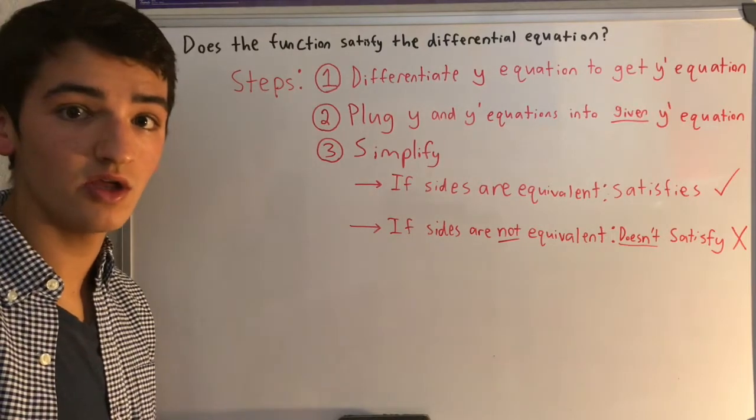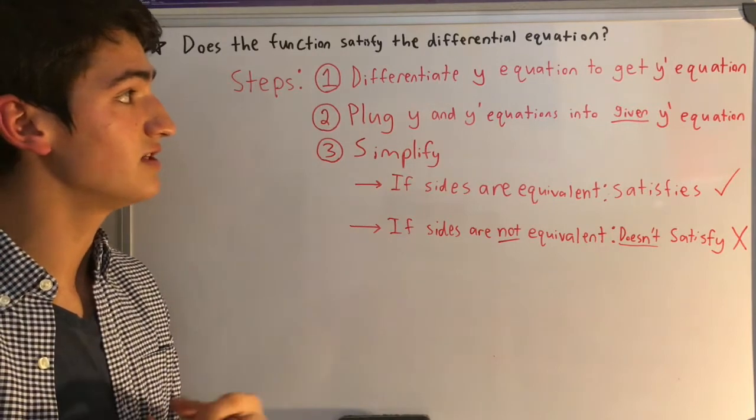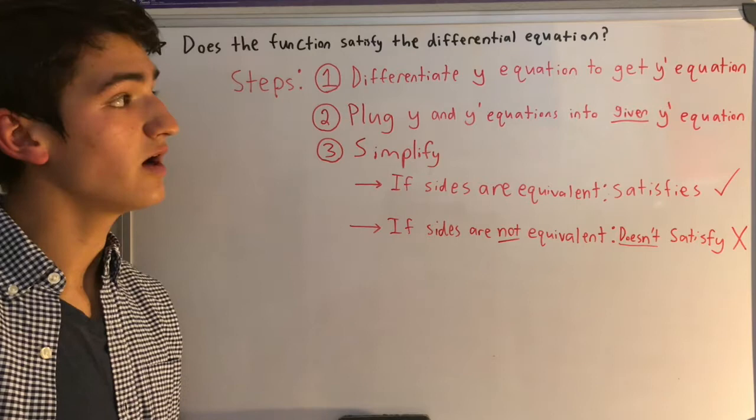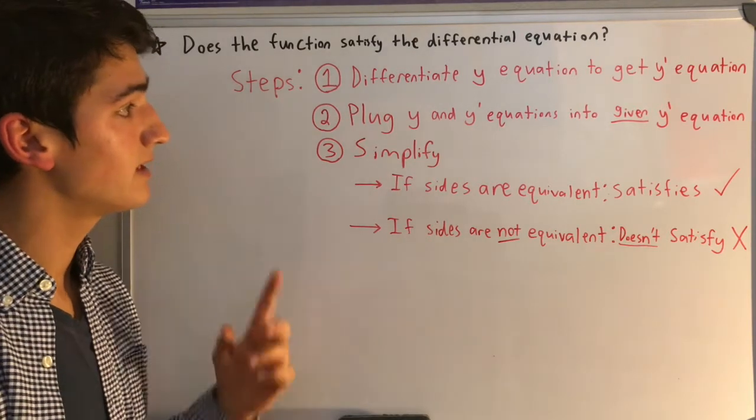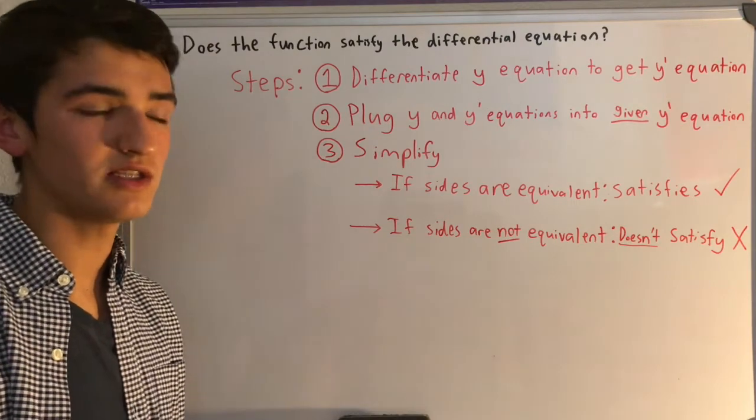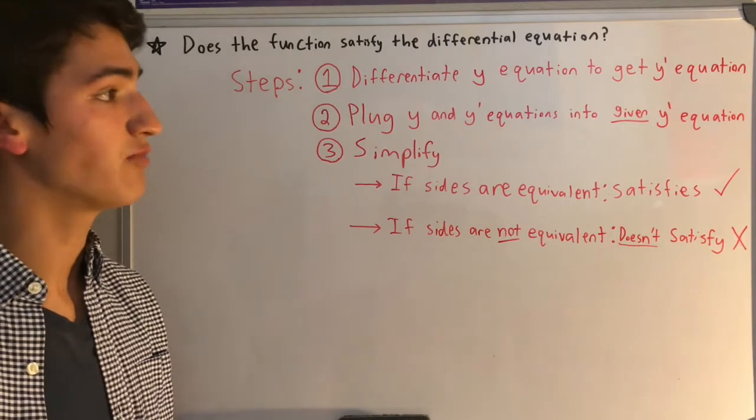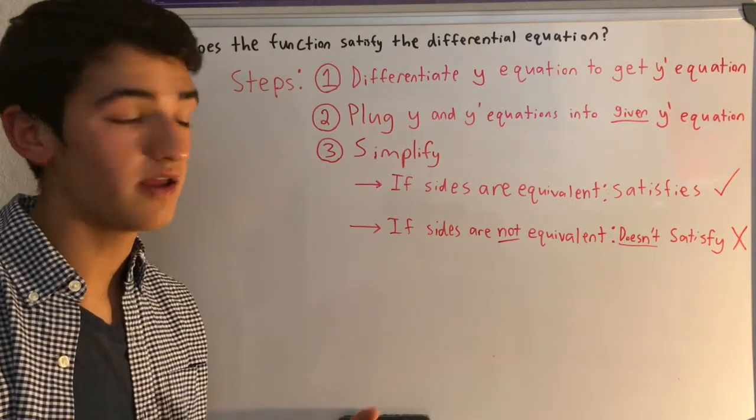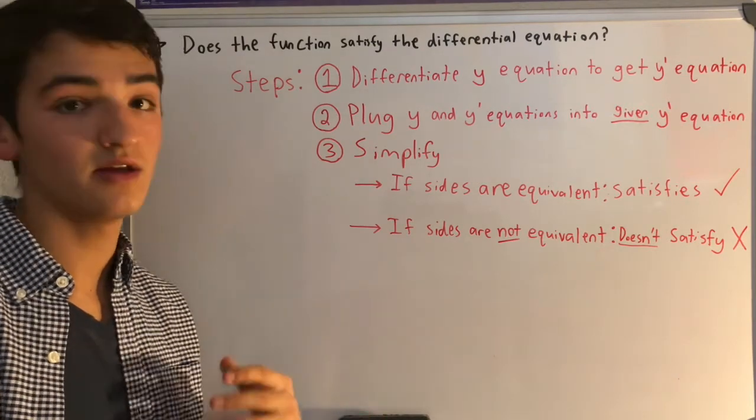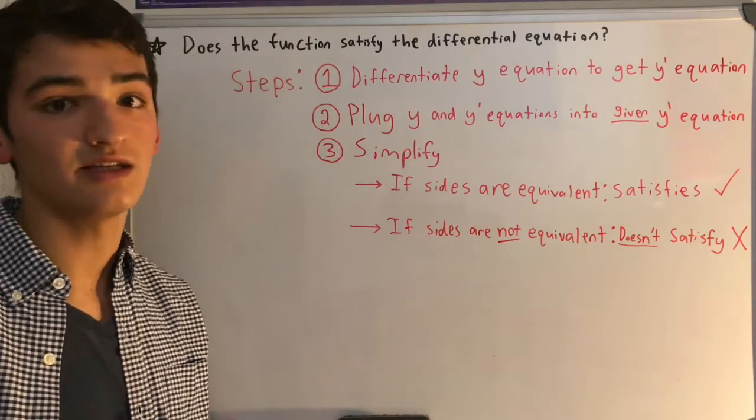So the three steps we're going to go through in every process: First, you're going to differentiate the y equation that's given to get a y prime equation. Second, you're going to plug that y equation as well as the y prime equation that you got by differentiating into the given y prime equation. And third, you're just going to simplify. If the sides are equivalent, then you know that the function satisfies the differential equation. And if they're not, then it doesn't satisfy.